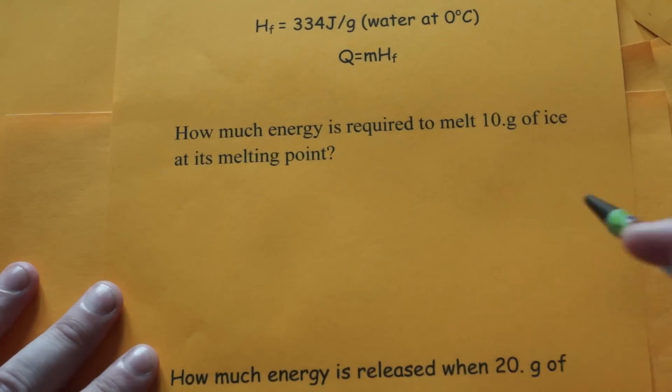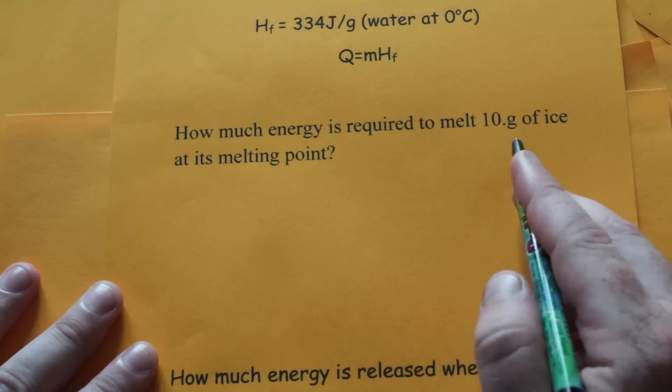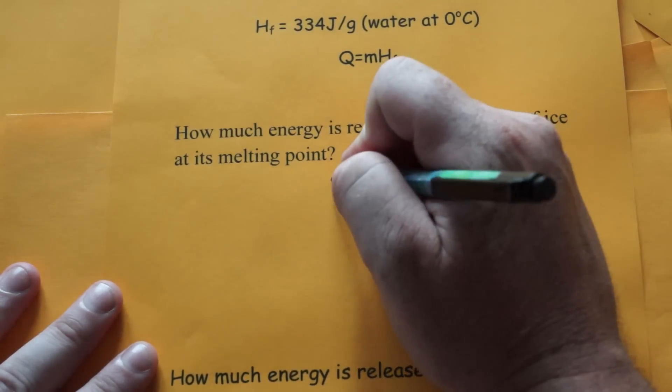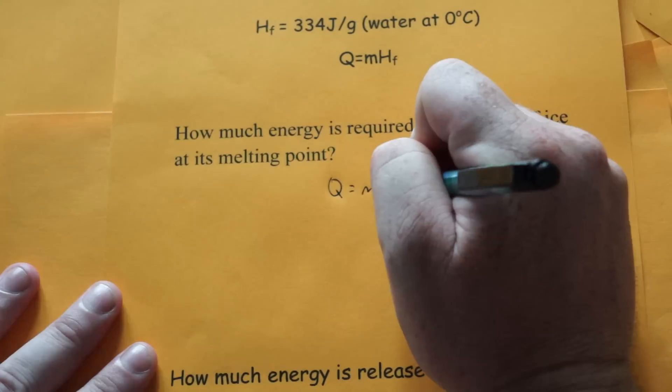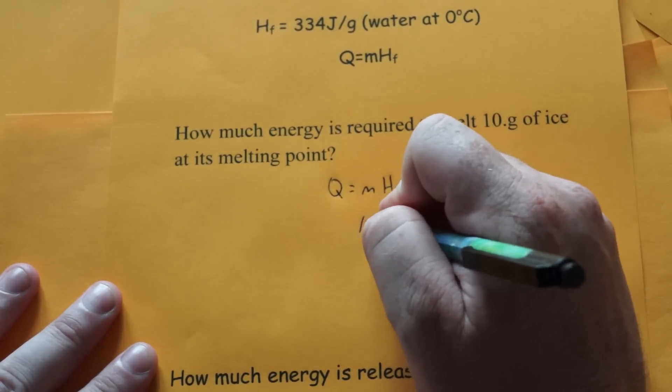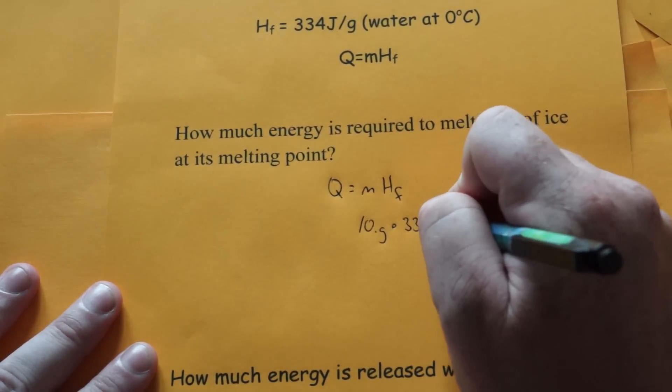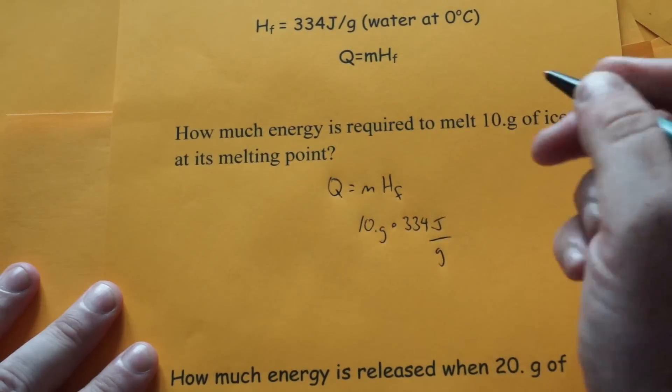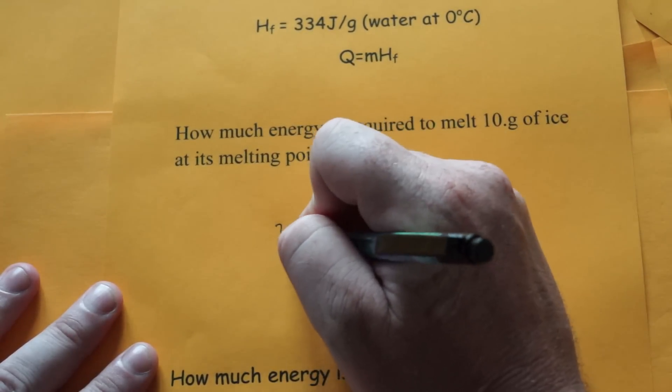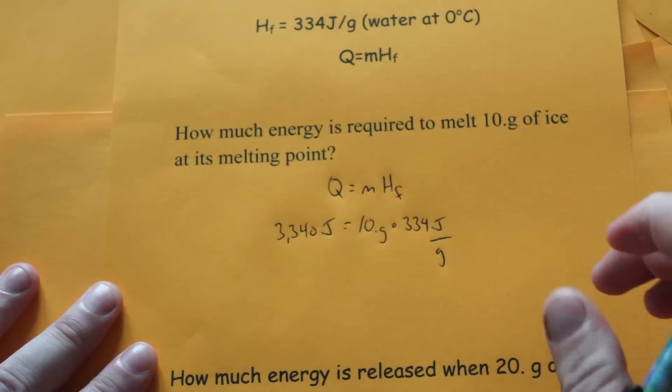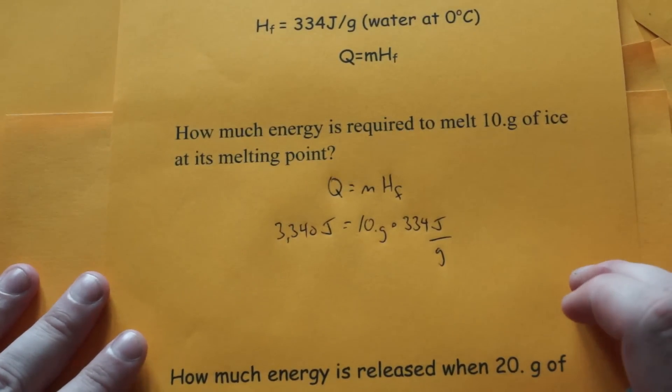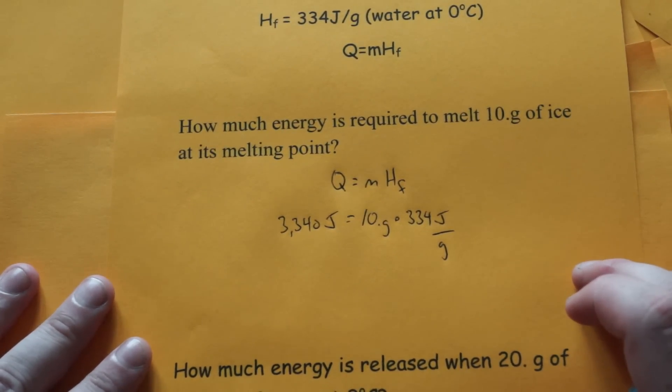Here's the first example: How much energy is required to melt 10 grams of ice at its melting point? We want Q, so we use the equation. Plug in 10 grams and multiply by 334 joules per gram. 10 times 334 equals 3,340 joules. That's how much energy is required to melt 10 grams of ice at its melting point.